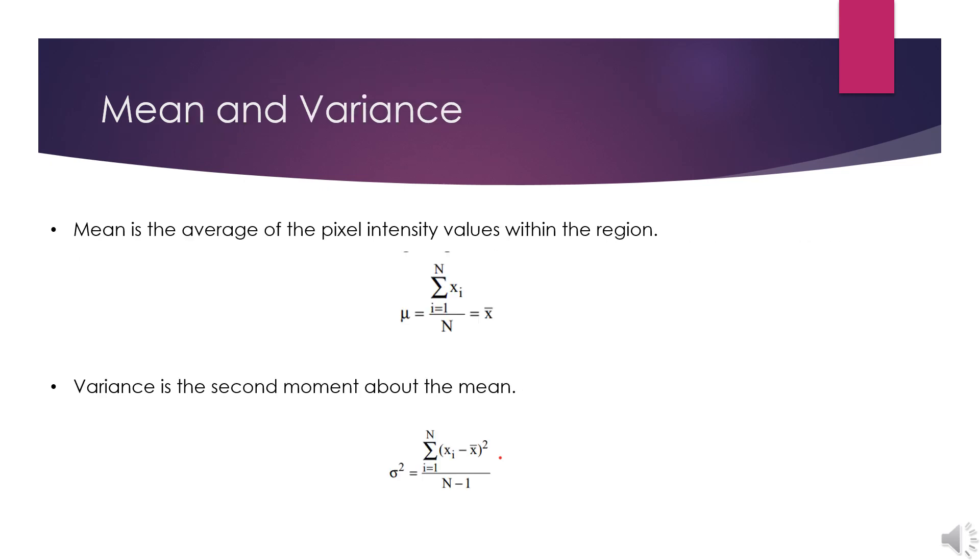Mean and variance. Mean is the average of the pixel intensity values within the region. Variance is the second moment about the mean. We already know the statistical definitions of mean and variance.